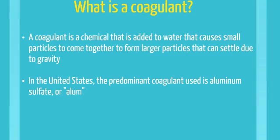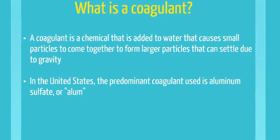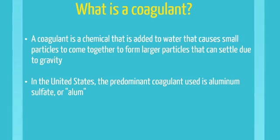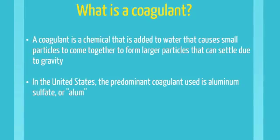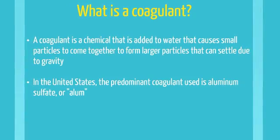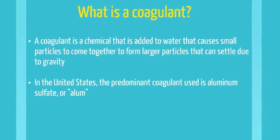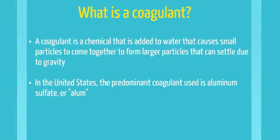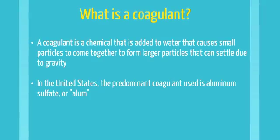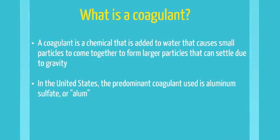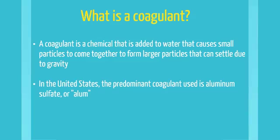A coagulant is a chemical that is added to water that causes small particles to come together to form larger particles that can settle due to gravity. In the United States, the predominant coagulant used is aluminum sulfate, or alum.